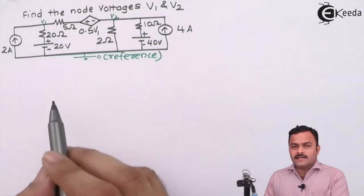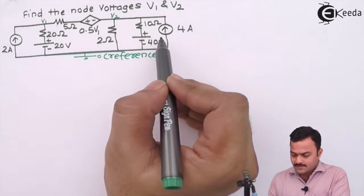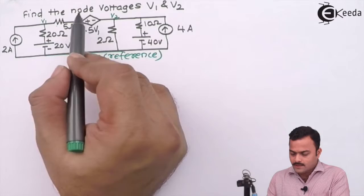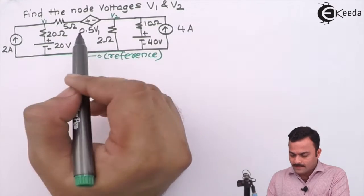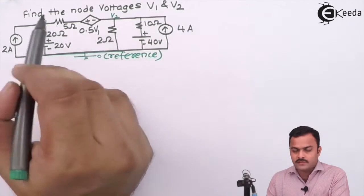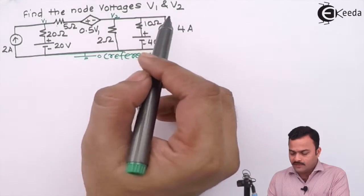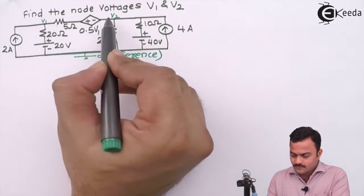We have two independent current sources, two independent voltage sources, and one voltage controlled voltage source which is a dependent source. The controlling voltage is the node voltage V1 itself, and we have to get node voltages V1 and V2. We have marked node V1, V2, and the reference having potential zero.